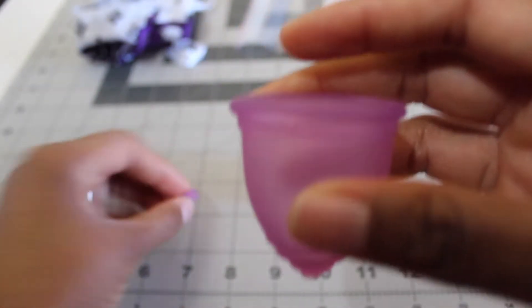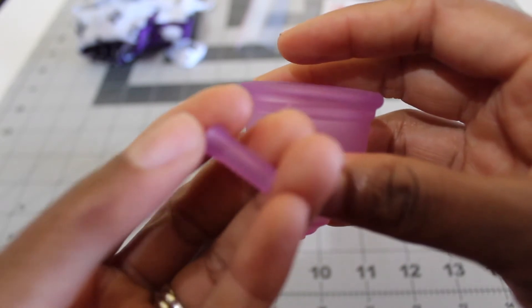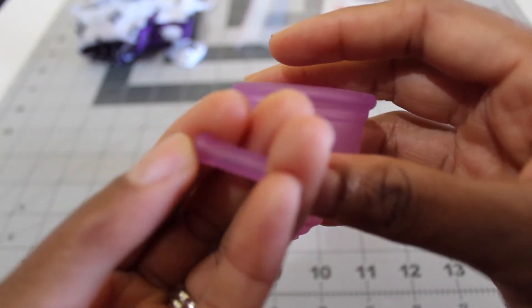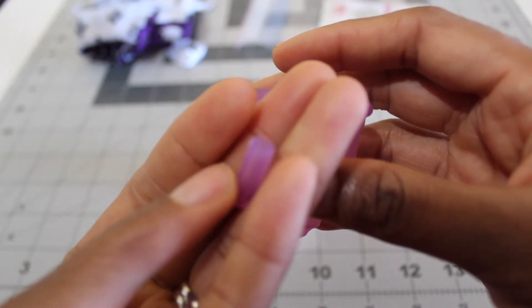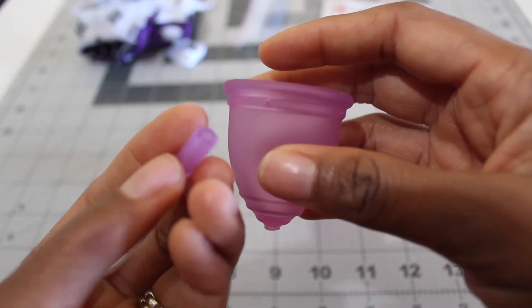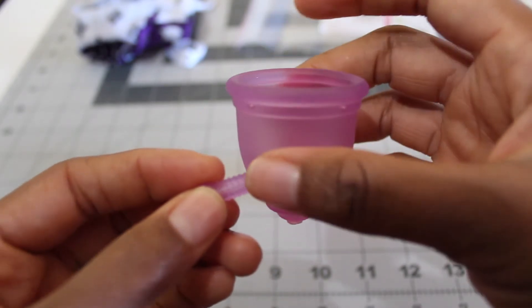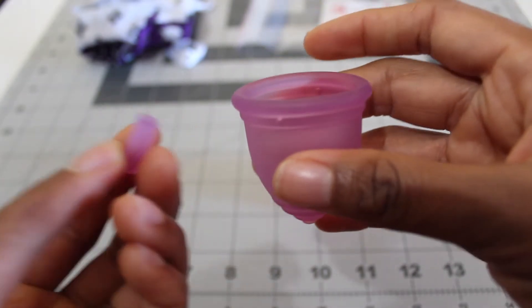So I've trimmed the stem off the Ruby cup. It has this kind of cylindrical stem that has these little knobs on it as grips. If your stem protrudes even a little bit this is going to be really irritating, so I didn't need a stem so I trimmed it off.